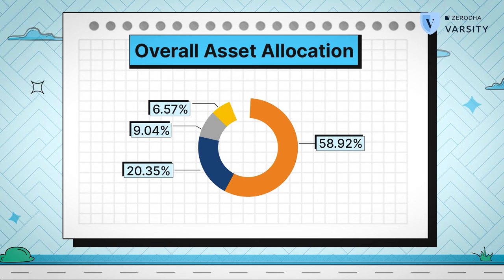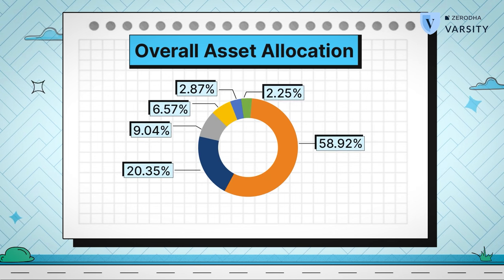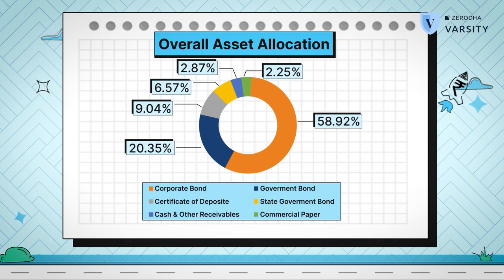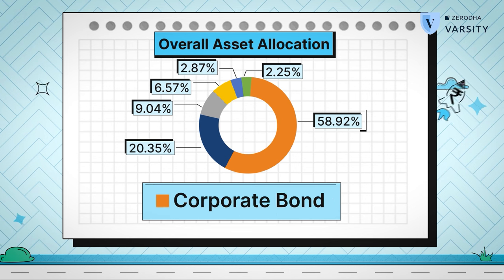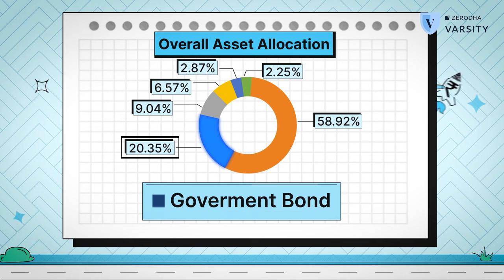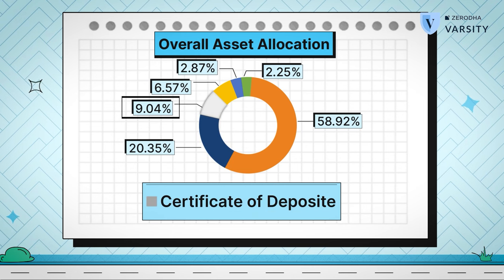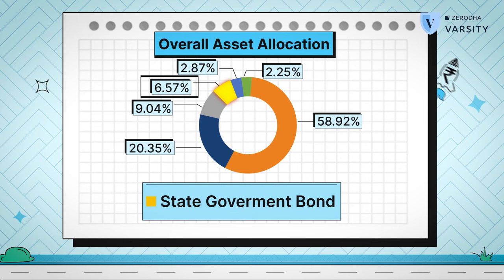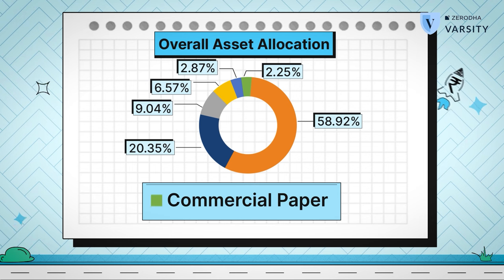This is available on the AMC's website. The portfolio is a mix of different papers: roughly 58% is invested in corporate bonds, 20% in government bonds, 9% in certificates of deposit, 6.5% in state government bonds, and the rest in commercial papers. The fund has about 60% allocation to corporate bonds, which means it's highly susceptible to both credit and default risk.